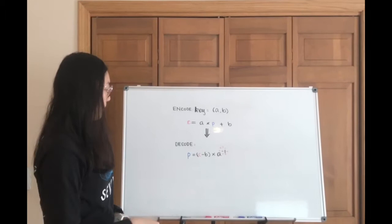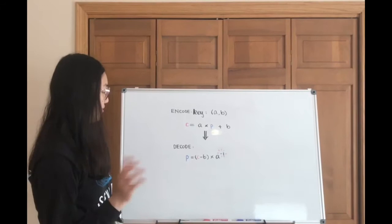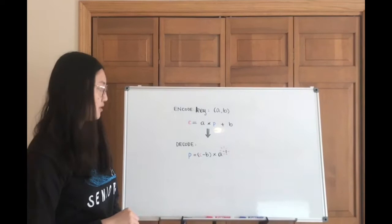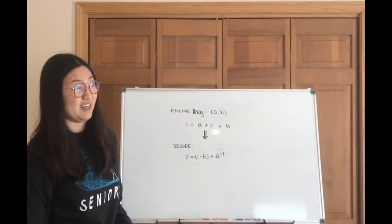So to decode, we kind of rearrange this formula into an equation about the plaintext. So some simple math, you need to subtract b from the cipher number, and then you multiply it by the inverse of a.